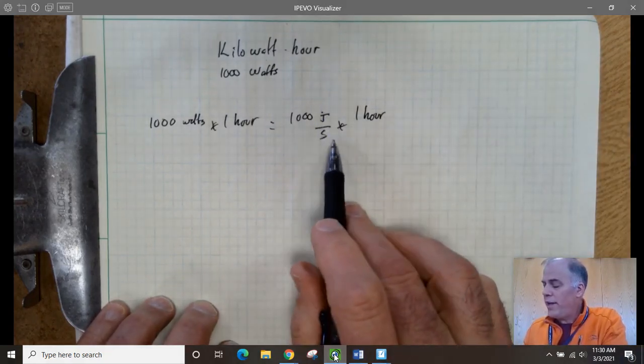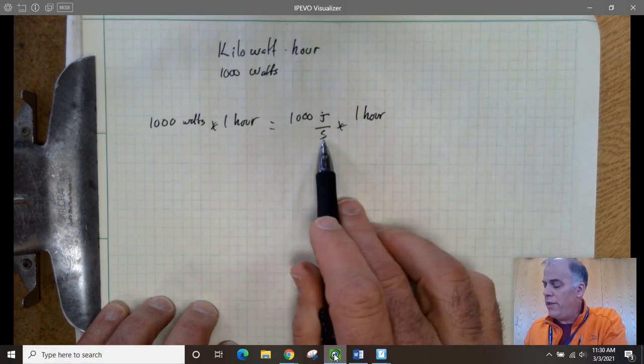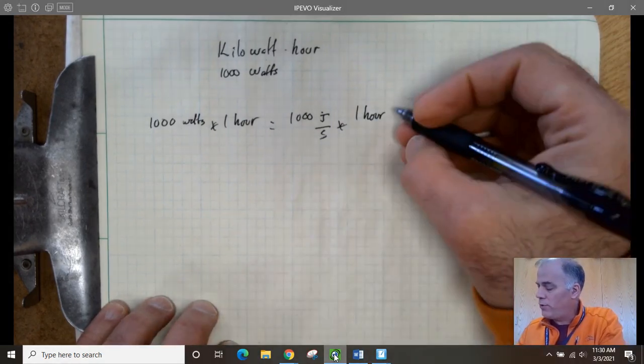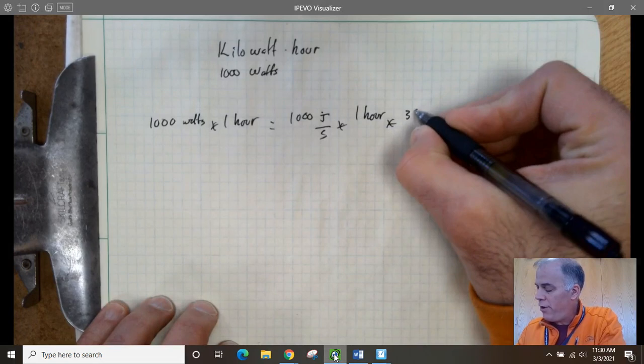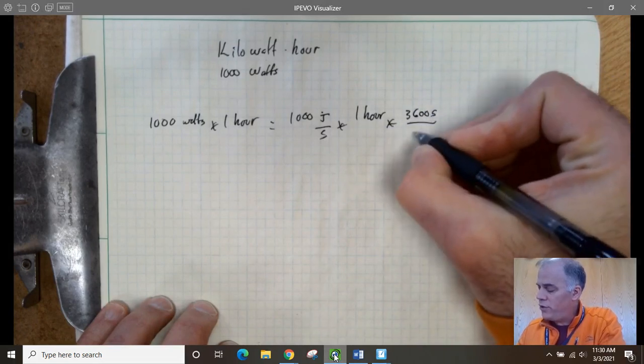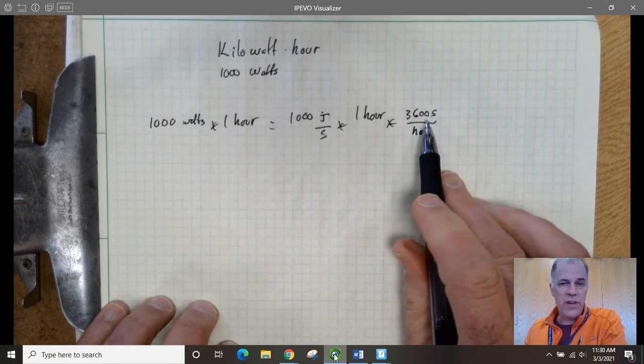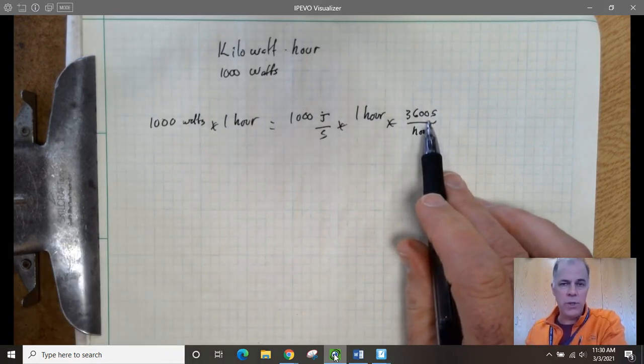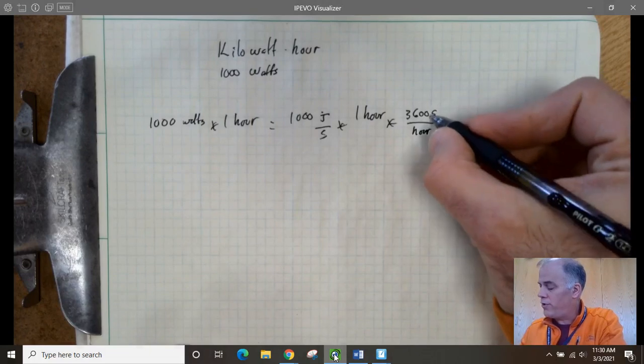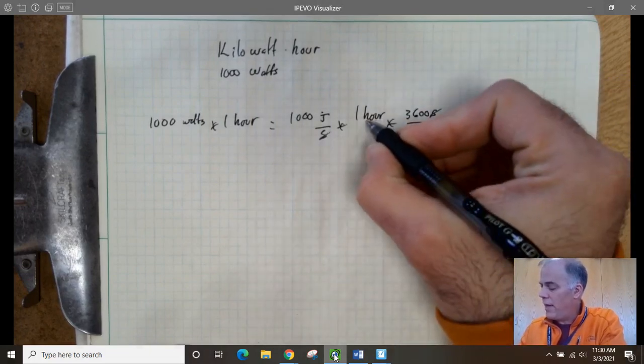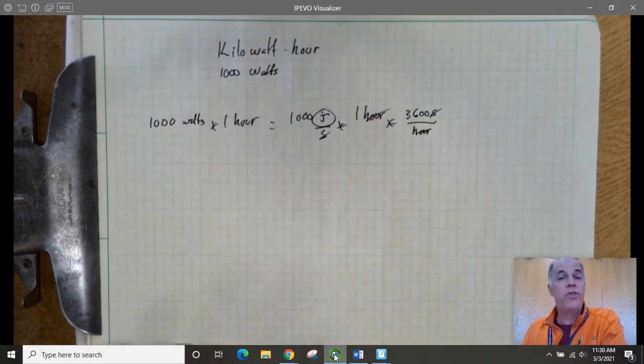Now, joules per second, so we have a unit of time in the numerator and in the denominator. So let's see if we can make this stuff cancel out. So we're going to multiply this by 3,600 seconds per hour, because you probably remember that there's 3,600 seconds in an hour, 60 seconds per minute, 60 minutes per hour, so 3,600. So the seconds cancel out, the hours cancel out, and it leaves us just with joules.